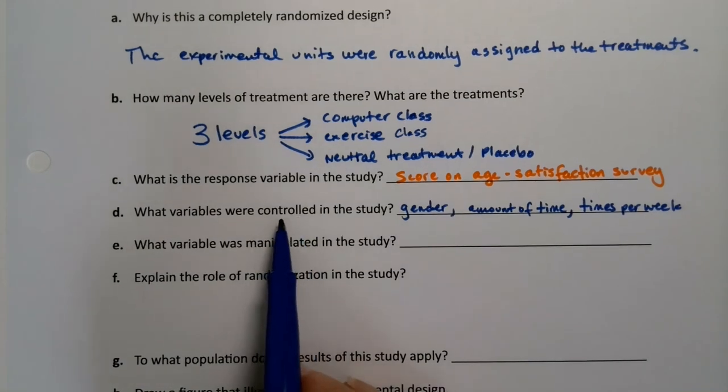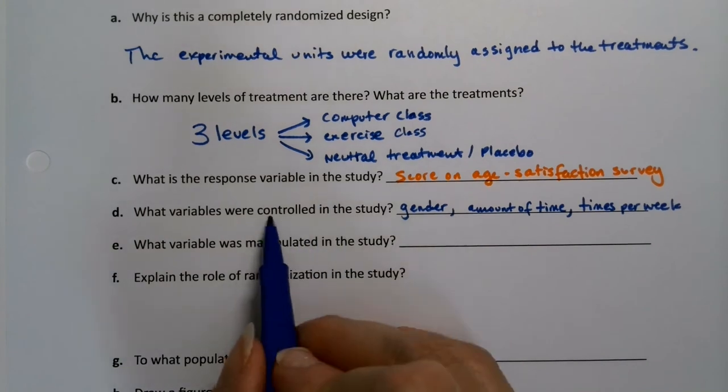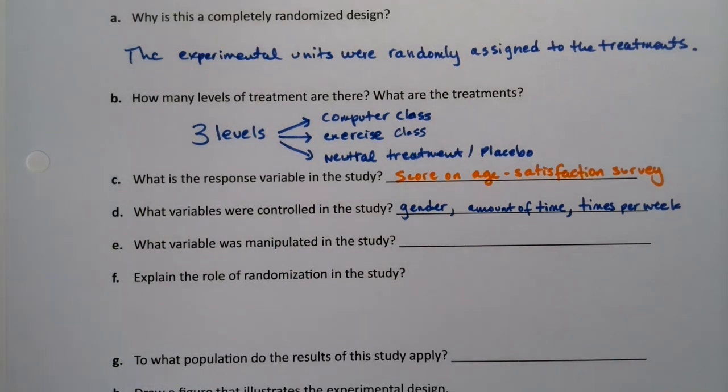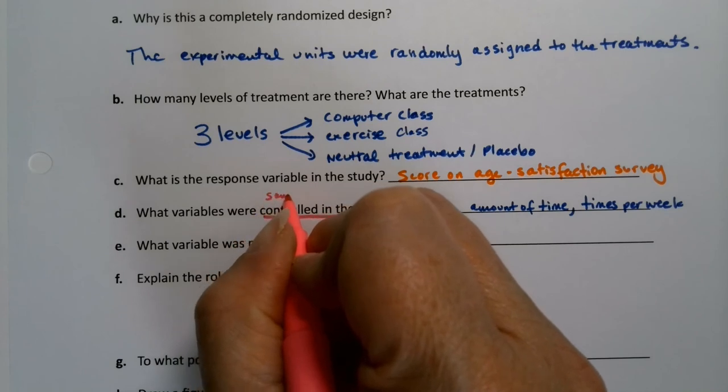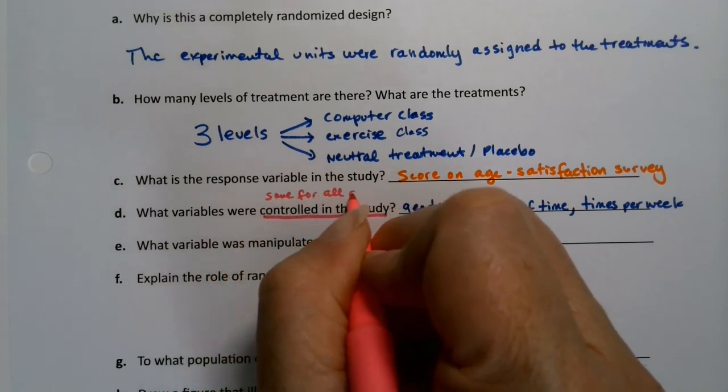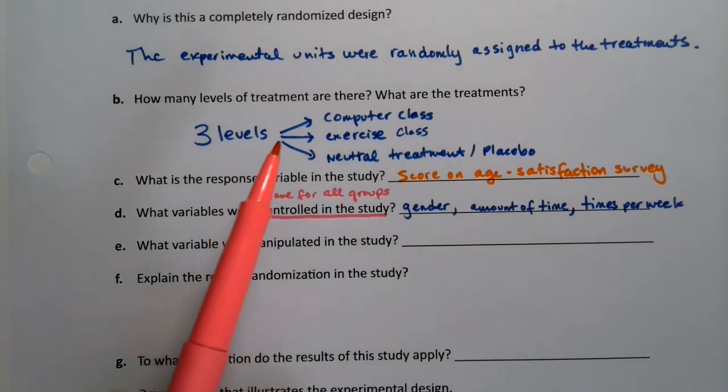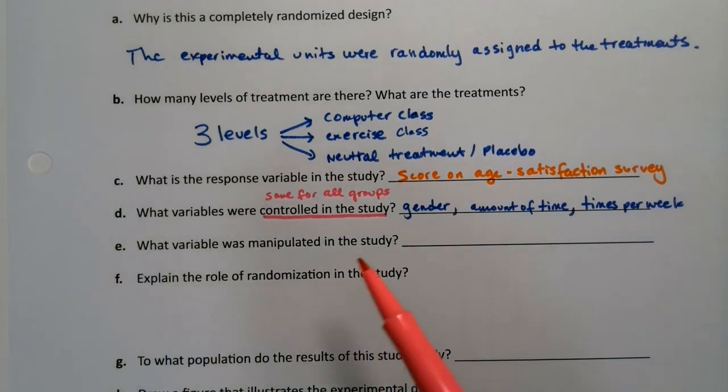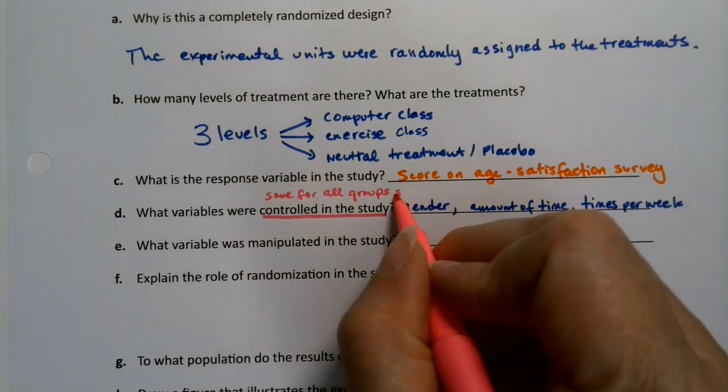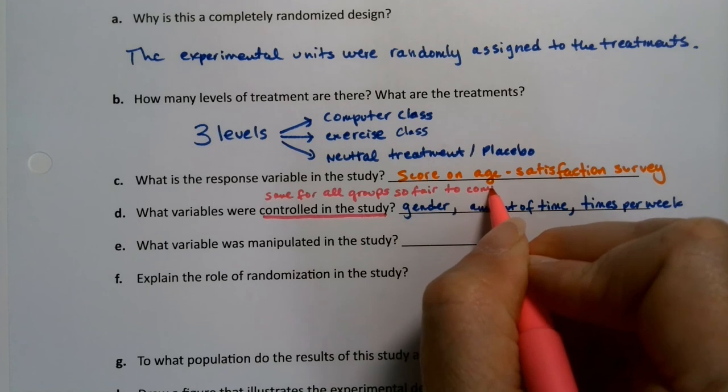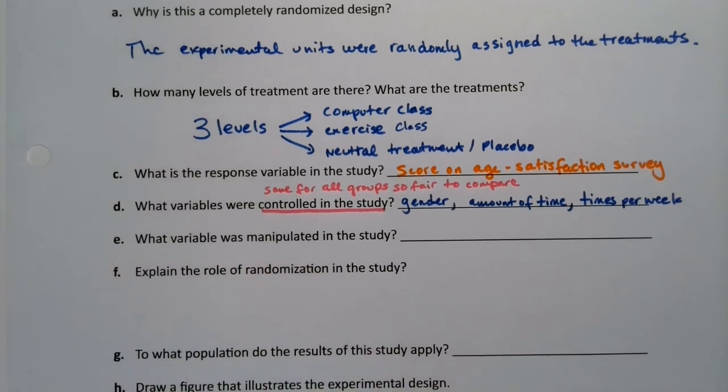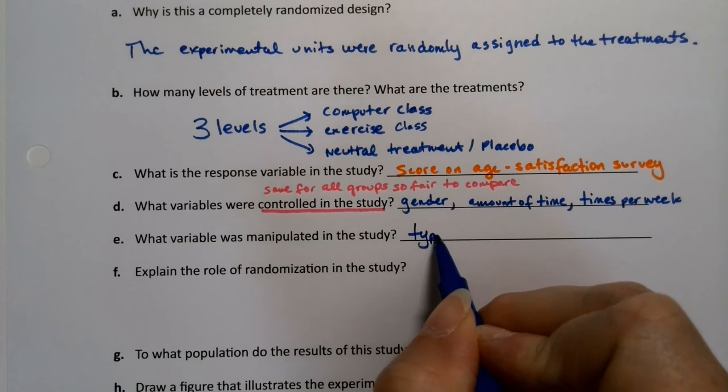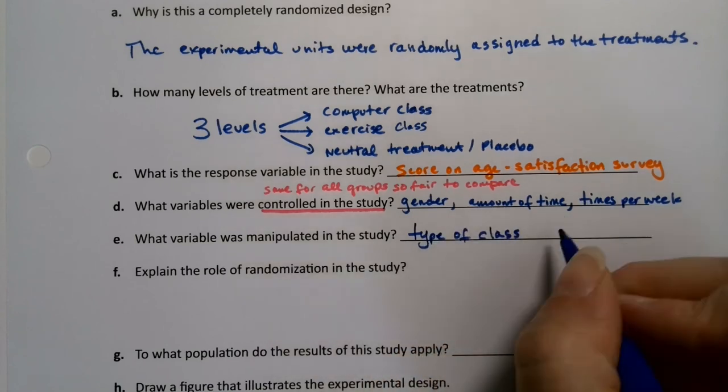So they're trying to make it the same, those things the same for all groups. When you're thinking about this controlling in the study they're trying to make it so that it's fair to compare across groups and the only way you can do that is if you control certain things so you're trying to make them the same for all groups. Now it's not talking about the control group. The control group is this group that receives the neutral treatment. It's saying what things were controlled in the study, what things are made the same for all the groups so it's fair to compare. That's what that means and it was gender and the amount of time and the times per week. All right, what variable was manipulated? Well obviously the type of class they were taking or not taking a class at all.